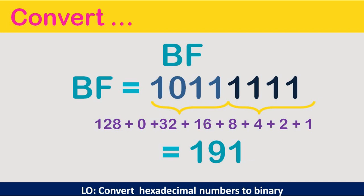So, when you have a code in hex BF, it means 191 in denary.